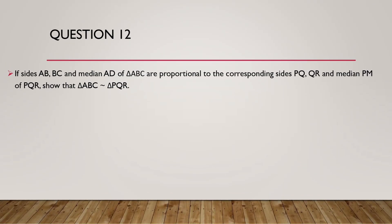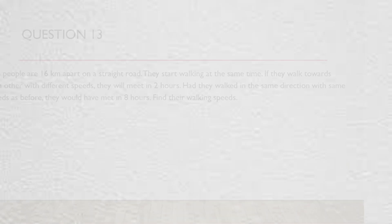Question 12. If side AB, BC and median AD of triangle ABC are proportional to the corresponding sides PQ, QR and median PN of triangle PQR, show that triangle ABC is similar to triangle PQR.